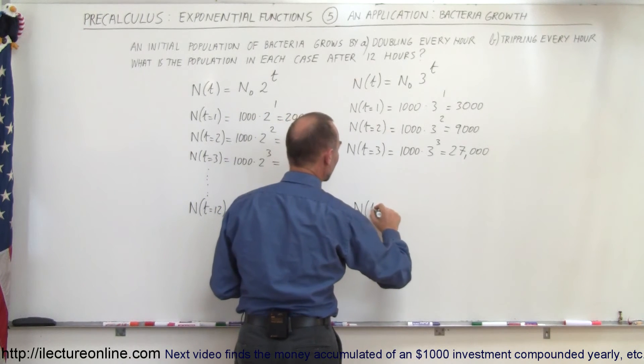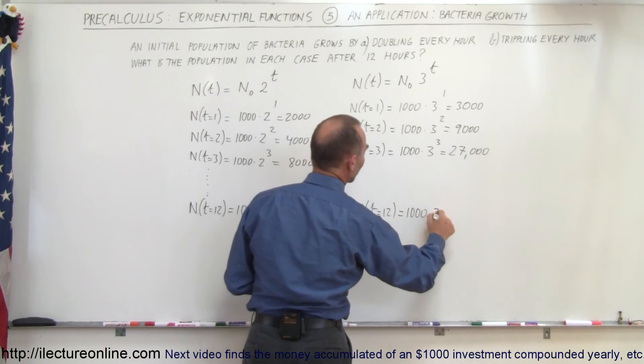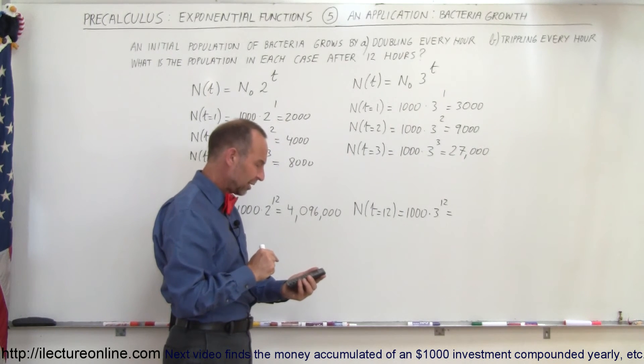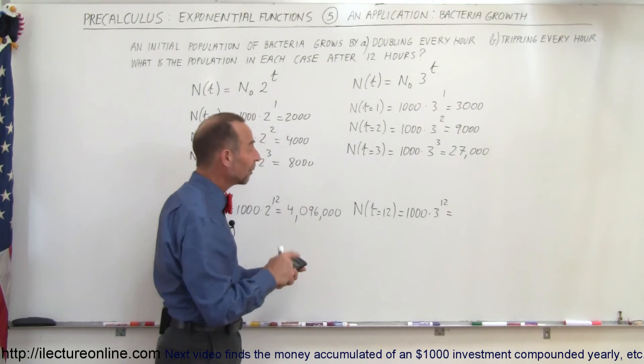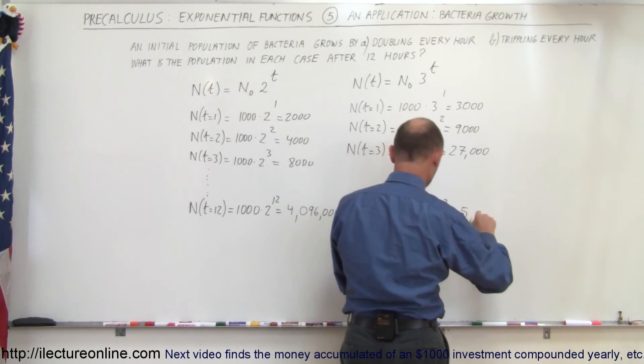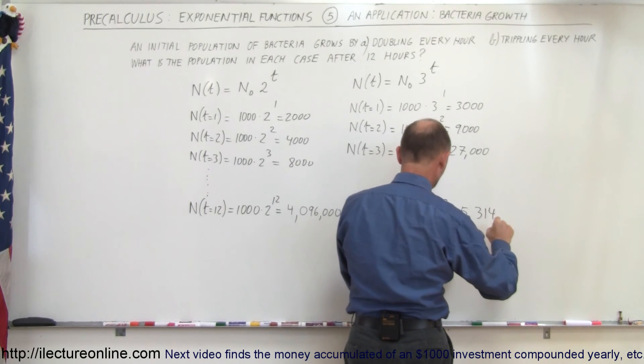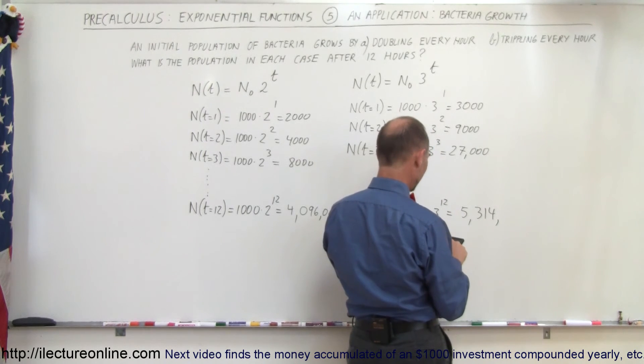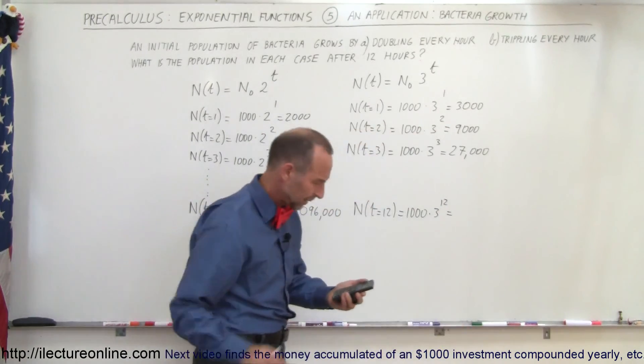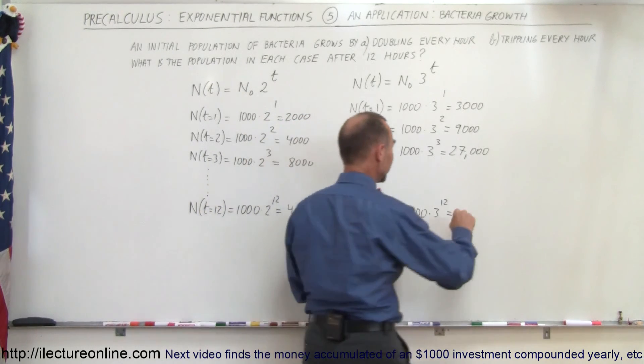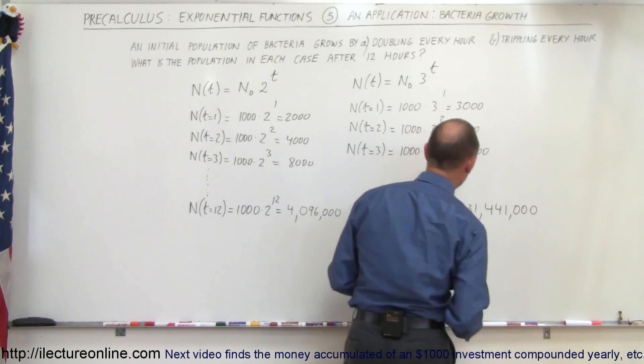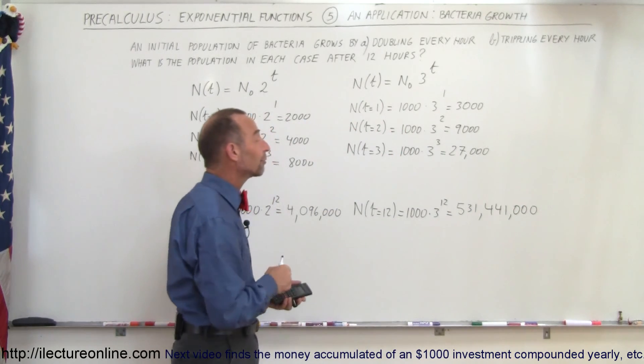Finally, when time equals 12 hours, that's 1000 times 3 to the 12th power. Again, we need a calculator. 3 raised to the 12th power... that's 531,441, times 1000... let me read this correctly: 531,441,000.